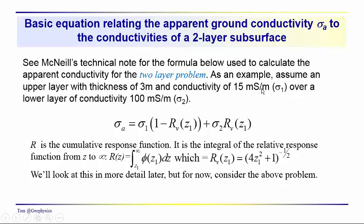Remember that millisiemens per meter and millimhos per meter are the same units, and this three meter thick layer sits over top of a layer that has a conductivity of 100 millisiemens per meter. It's our sigma one and our sigma two.